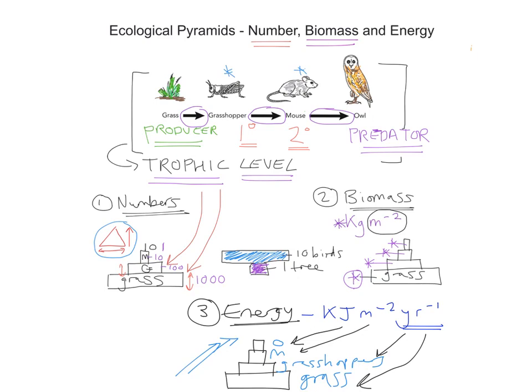That's the fundamental difference between numbers, biomass, and energy. As you go from pyramid one to three, each gives you a little bit more information about what's going on. These all relate to the food chain of grass, grasshopper, mouse, and owl. Note that you can't really draw these pyramids for a food web, because in a food web one organism could occupy two roles — for example, if the mouse also ate grass, it would act as both a primary and a secondary consumer, so you wouldn't be able to draw a pyramid for that instance. Pyramids only really work for food chains.